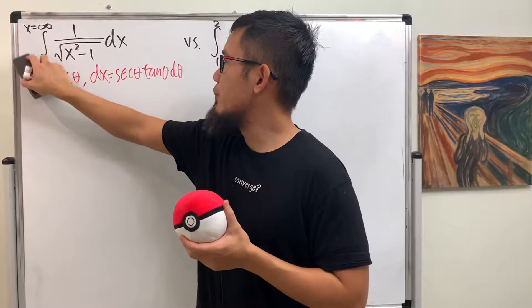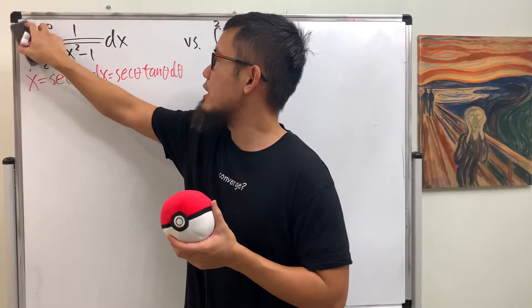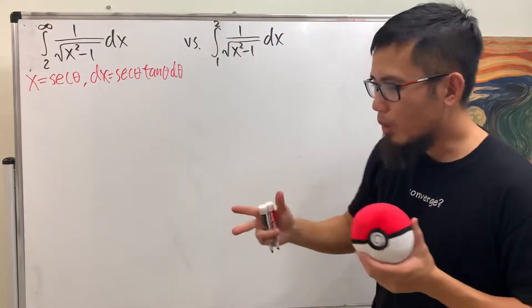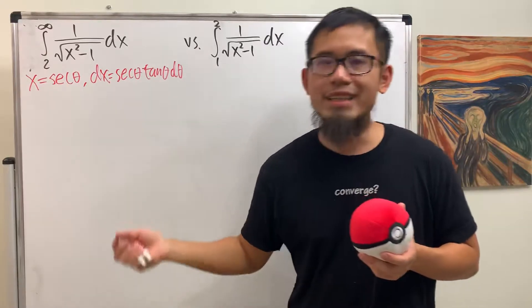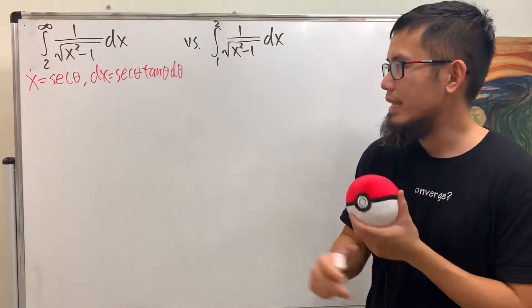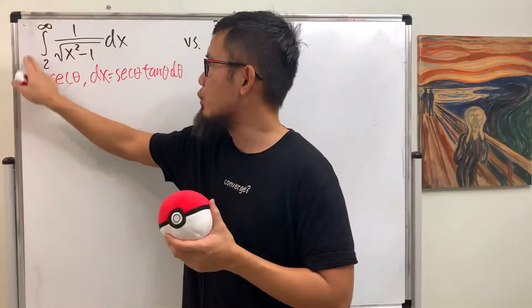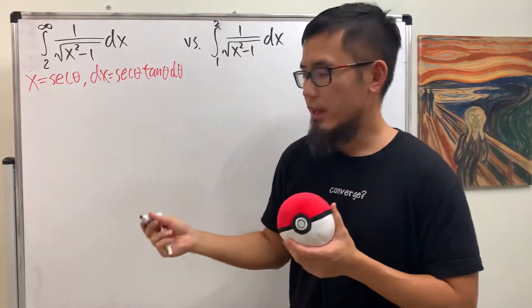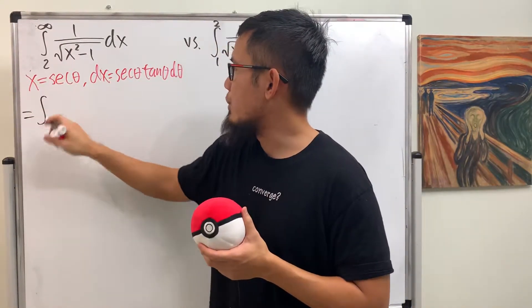It might be better if we just use trig sub, just go to the theta world to finish the integration, and then come back to the x world, and then do everything there. So let's just ignore the numbers right here for now. With that being said, let's just focus on the integration.